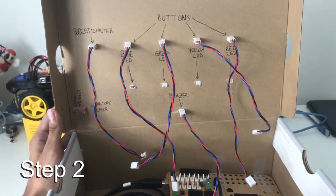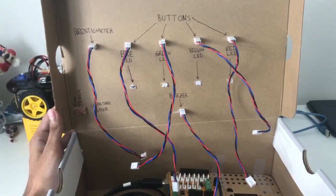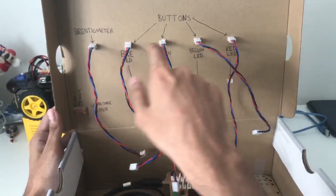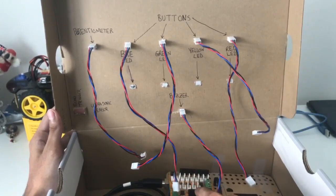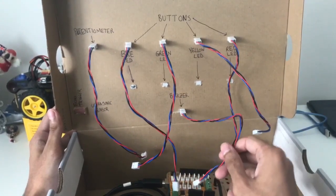Once we've done connecting the jumper wires to the bottom of the box, we can begin attaching them to the board. These five wires here will be connected to input 0 to input 4, and the buzzer will be connected to output 0.